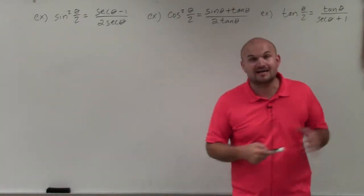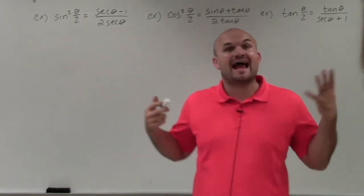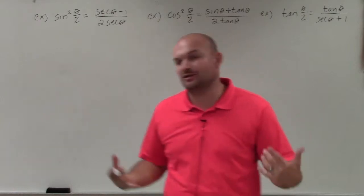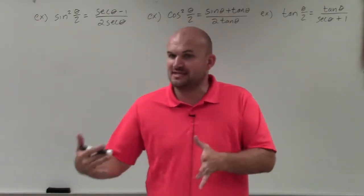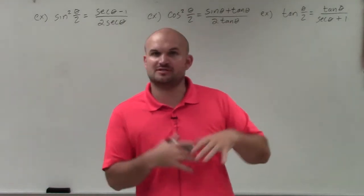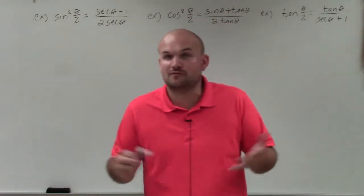What I'd like to do is show you how to verify an identity by using our half-angle formulas. Particularly when we're doing identities to verify identity, we want to show that the left side is equal to the right side. We're always using identities: Pythagorean, co-function, even, odd, and so forth.